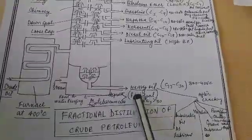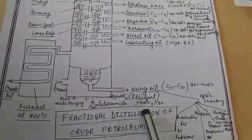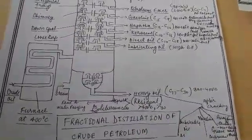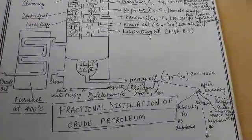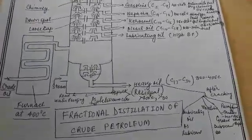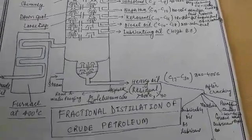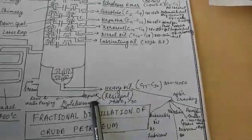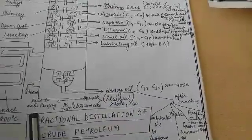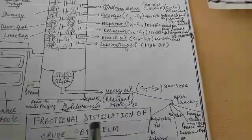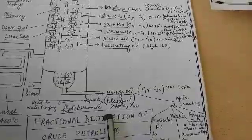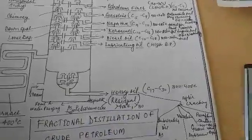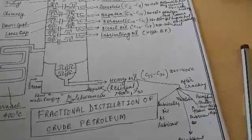The residue is obtained at temperatures above 400 degrees centigrade and contains carbon more than 30. Two fractions are obtained from the residue: asphalt, which is used for road making and waterproofing, and petroleum coke, which is used as a fuel. Thank you.